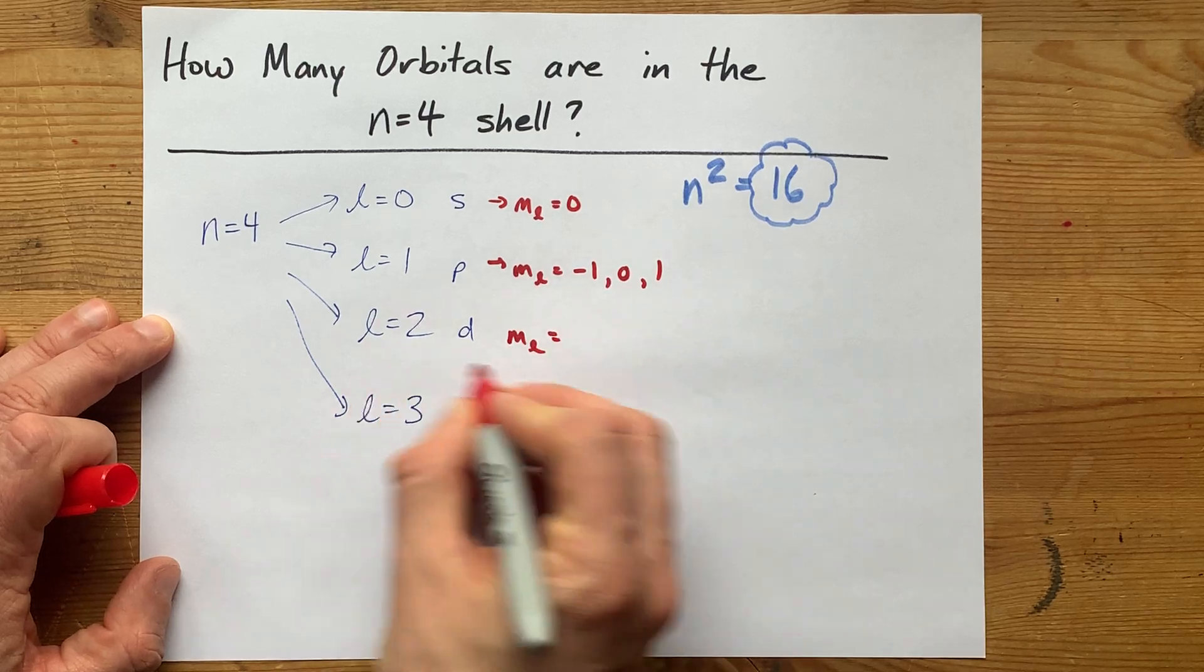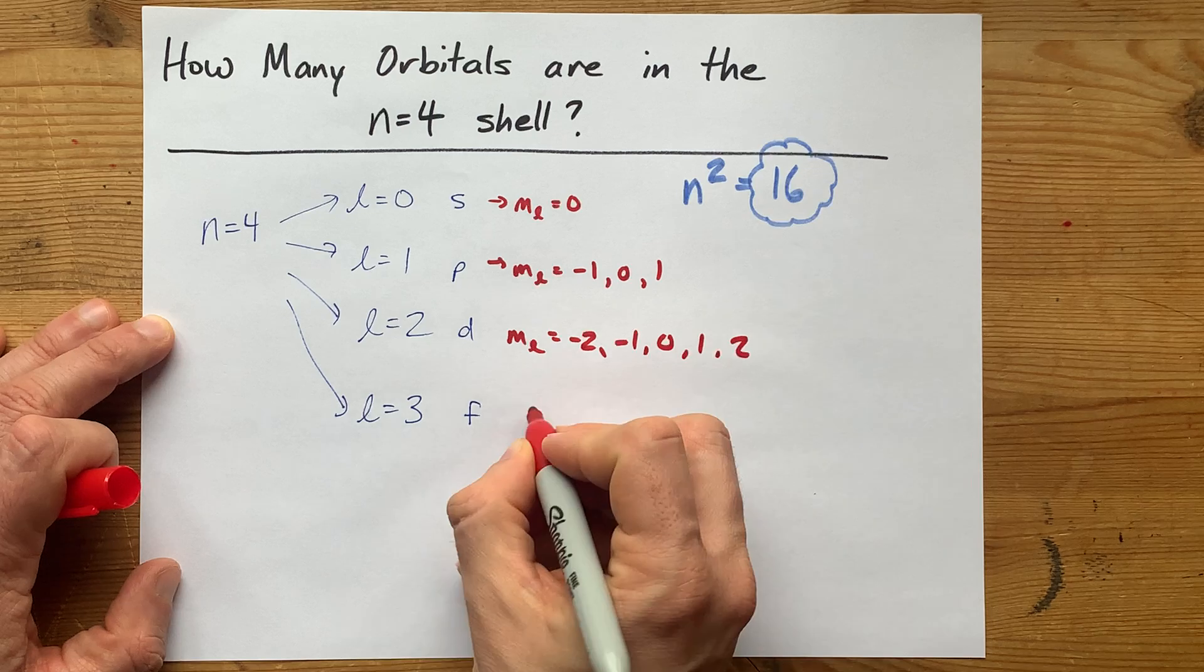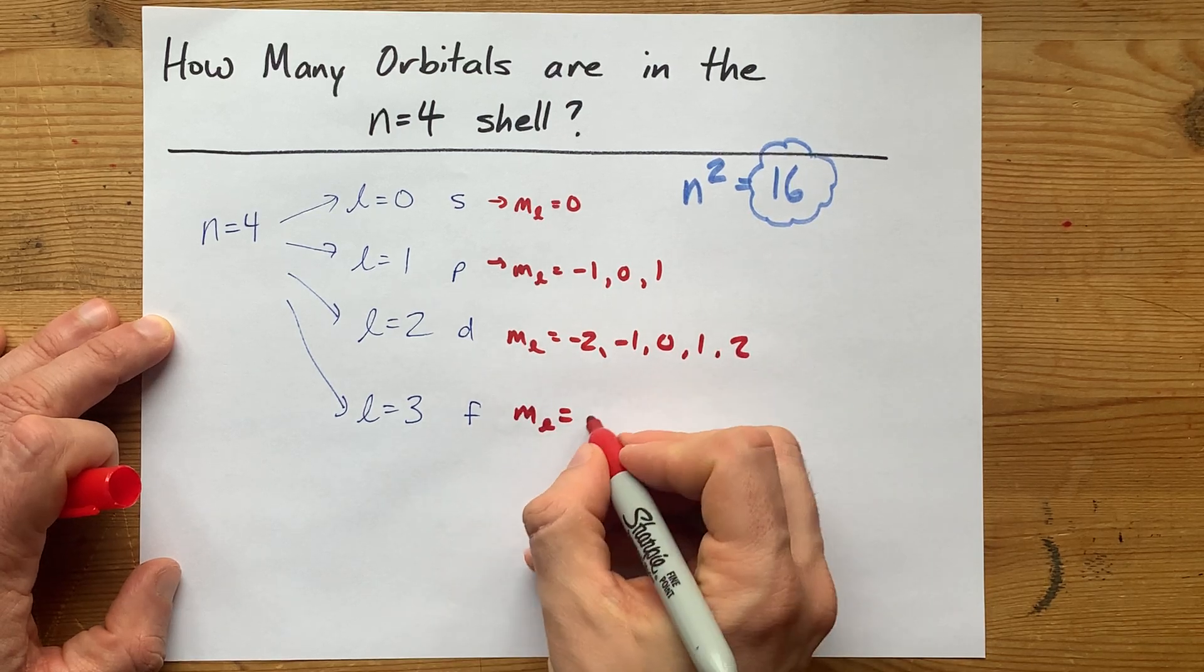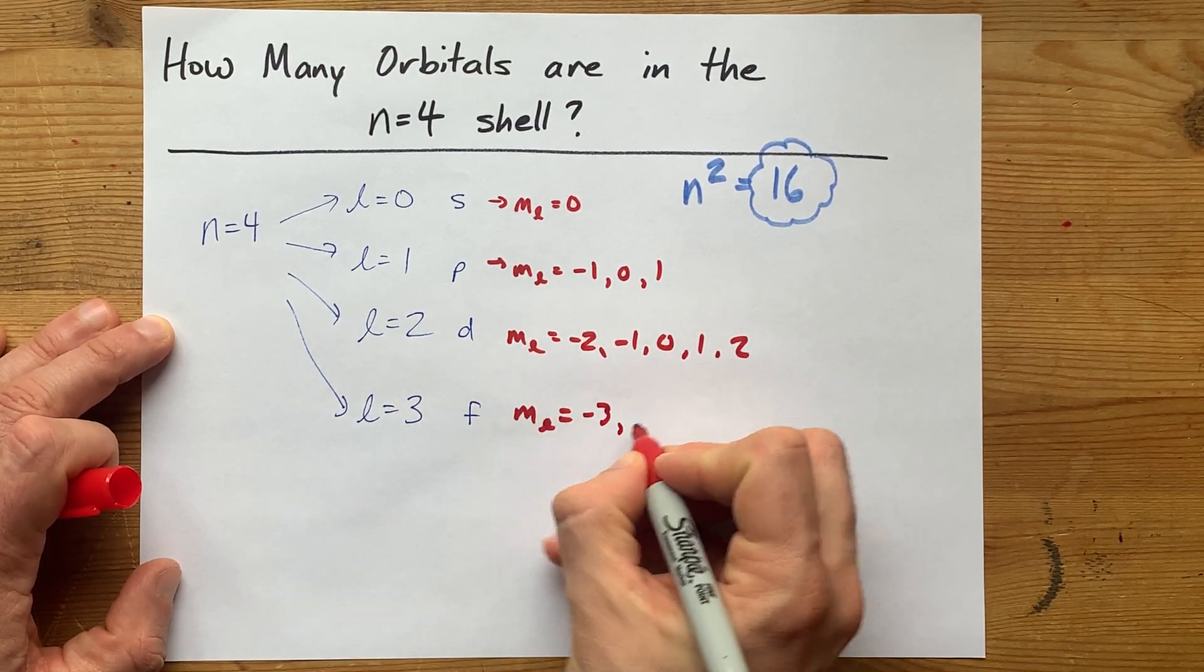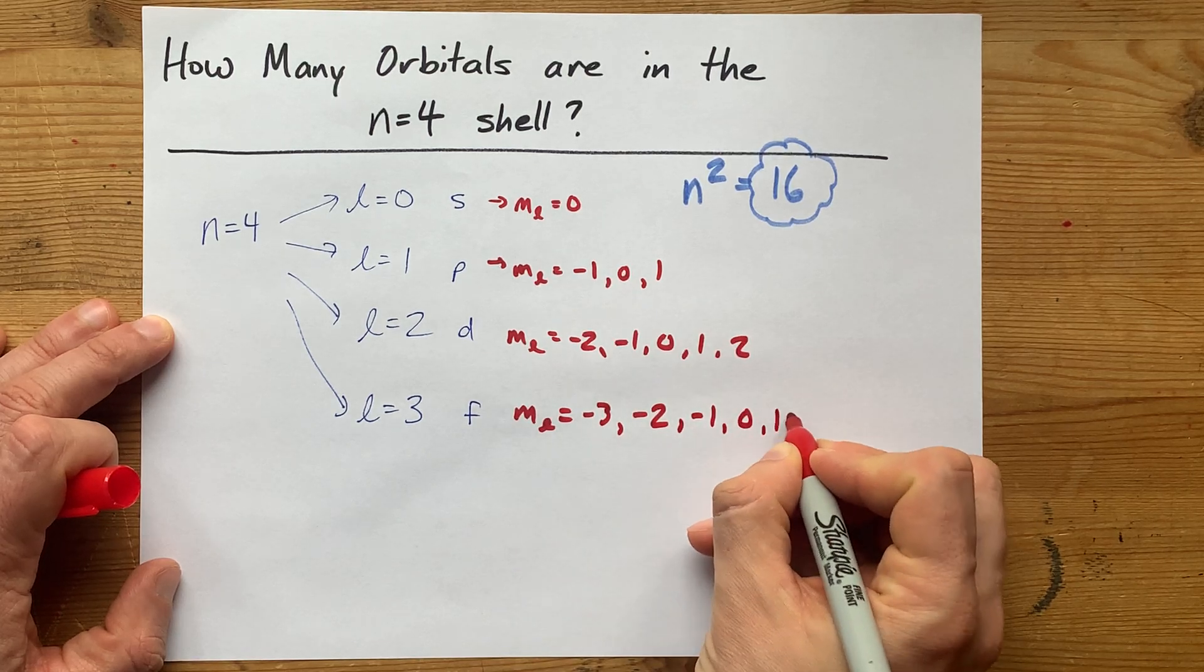When l is 2, it can be negative 2, negative 1, 0, 1, or 2. And you've probably figured out that when l is 3, your ml can go all the way from negative 3 up to positive 3.